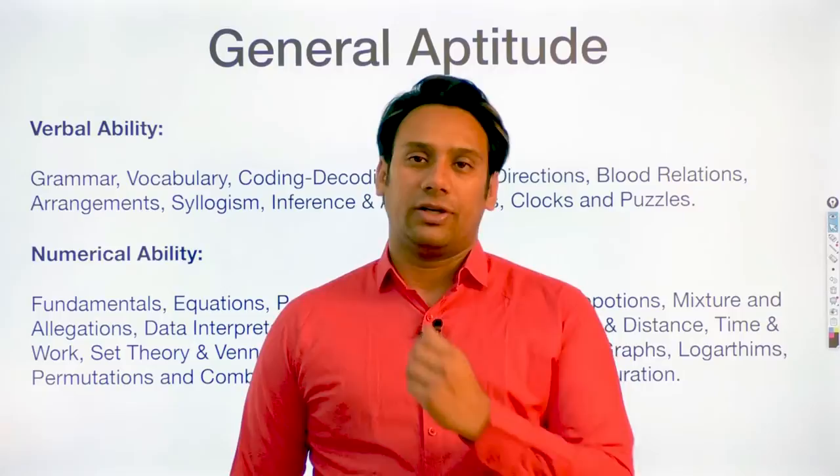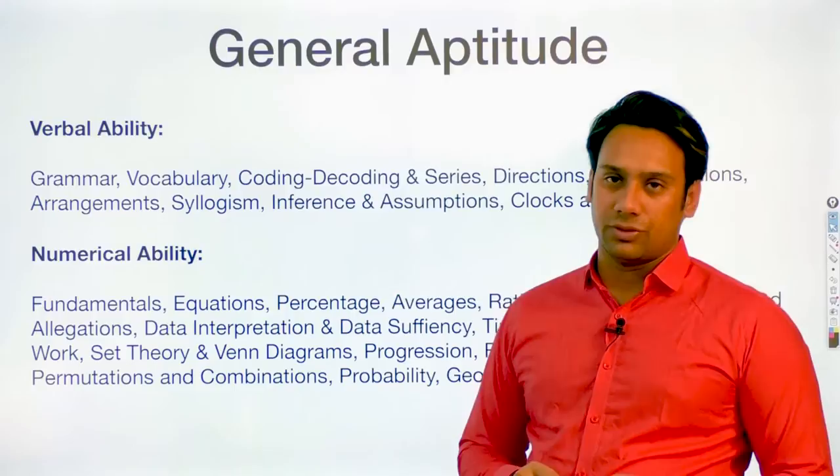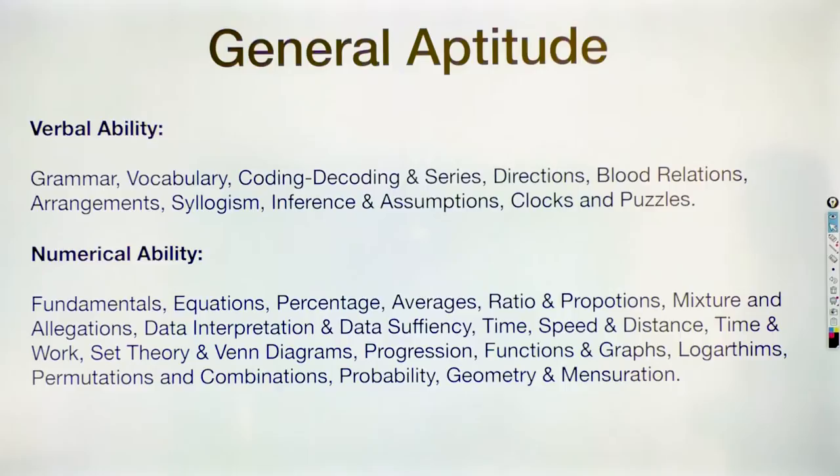In the aptitude part, we have two portions. One is verbal aptitude and the second one is numerical aptitude. Verbal aptitude contains: grammar, vocabulary, coding, decoding series, directions, blood relations, arrangements, syllogism, inference and assumptions, clock and puzzles.